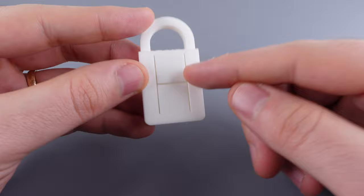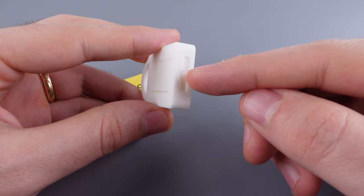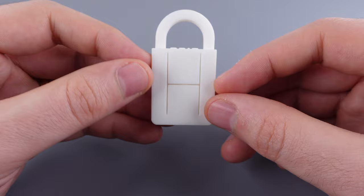Our first step here is to release the key which is hidden inside of the lock itself. You can see the tip of the key there is flush with this opening on the end of the lock. In order to release that key we need to pull up this top panel slightly.